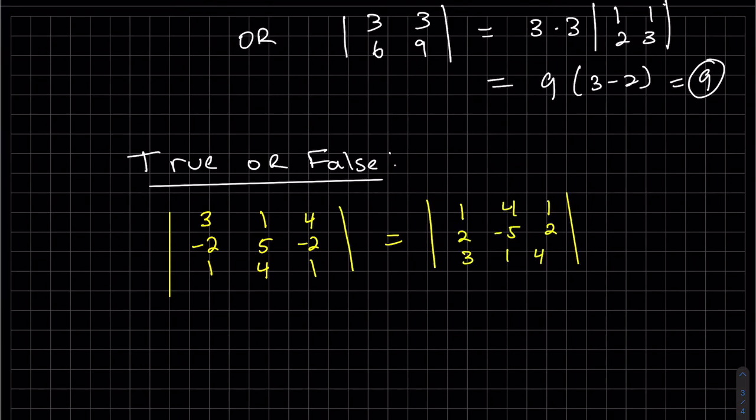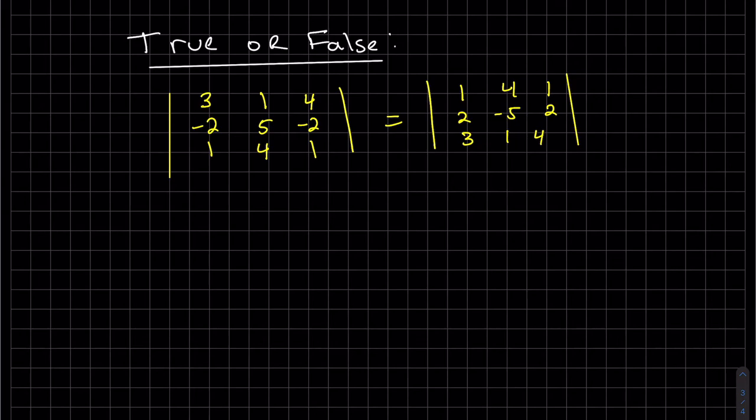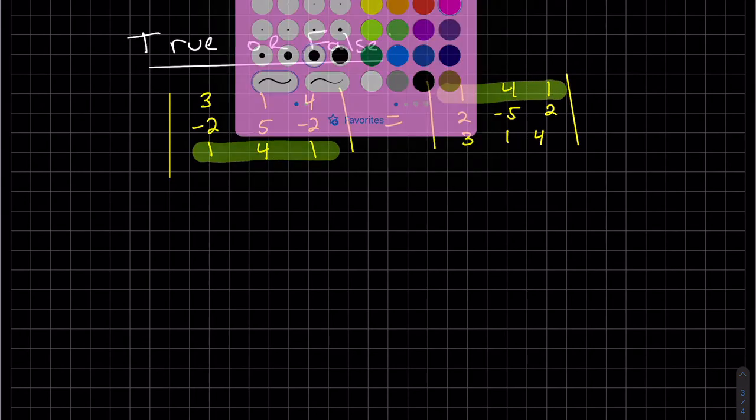So of course you can find the determinant of the left, find the determinant of the right, and then see if they're equal. But can anyone tell quickly by looking? Well, let's look and see what I did. So I swapped two rows, which means they should be off by a negative. But what else did I do?